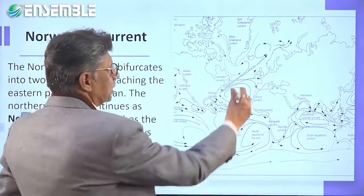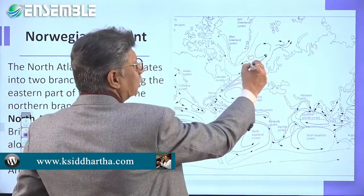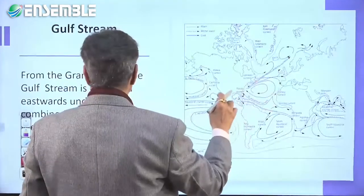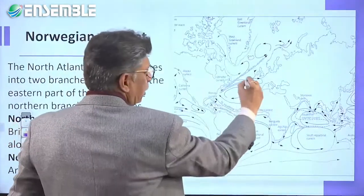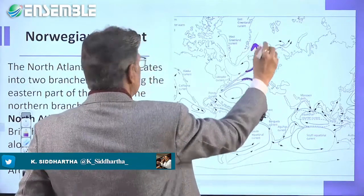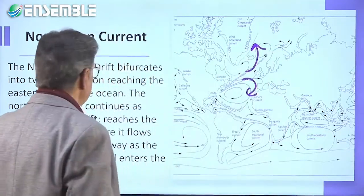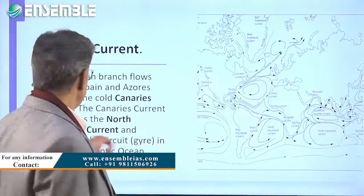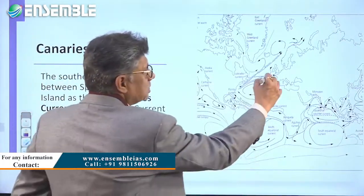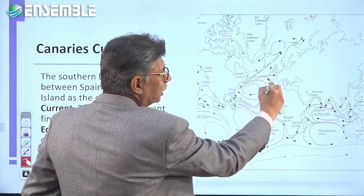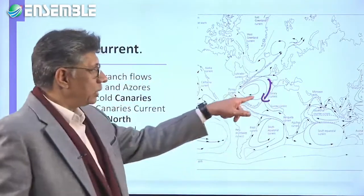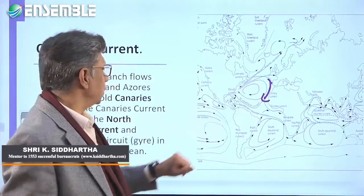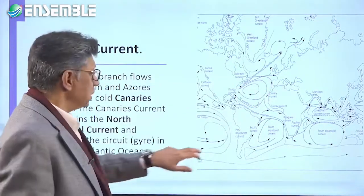The North Atlantic Drift bifurcates, with one branch completing the full cycle known as the Azores Current and Canary Current. The Canary Current is a cool current, largely because it is affected by upwelling in this region.